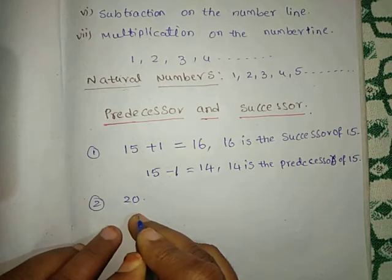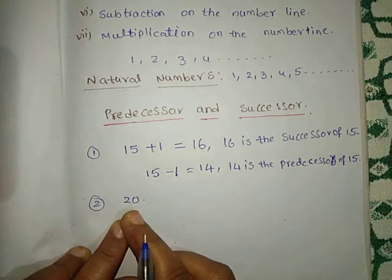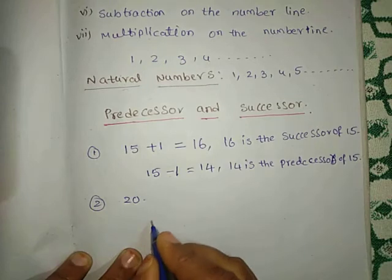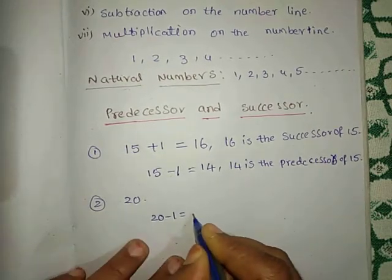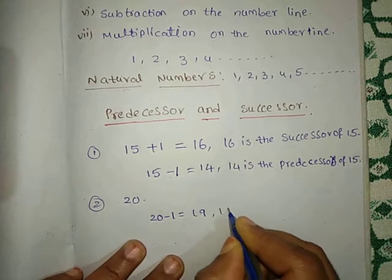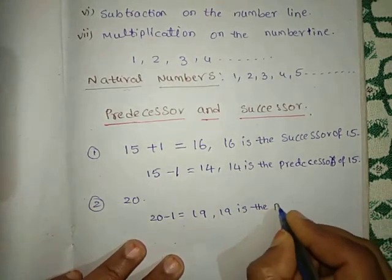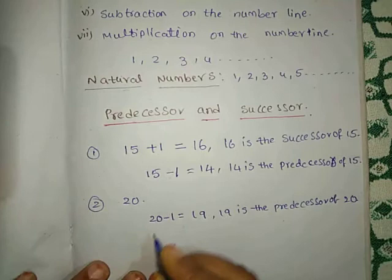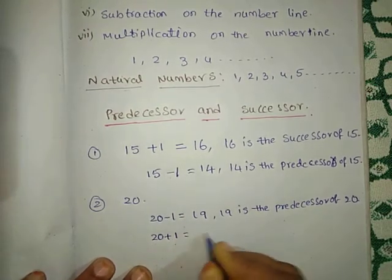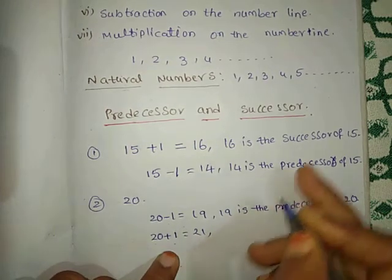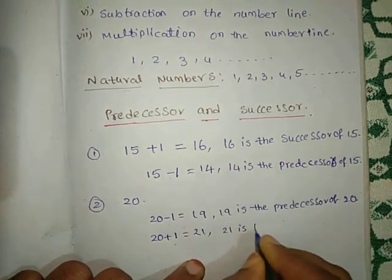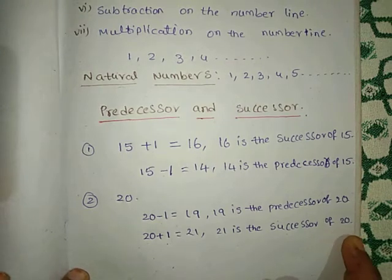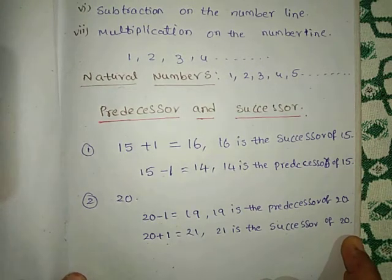Here the number 20 is given. Now I want the predecessor and successor of this number. Predecessor means 20 minus 1, which equals 19. So 19 is the predecessor of 20. Similarly, 20 plus 1 equals 21. So 21 is the successor of 20. With these examples, I have shown predecessor and successor of numbers.